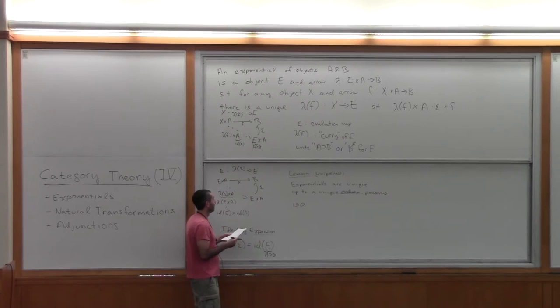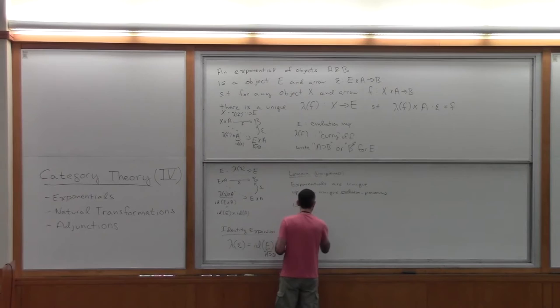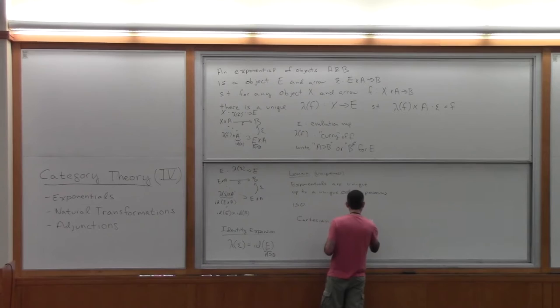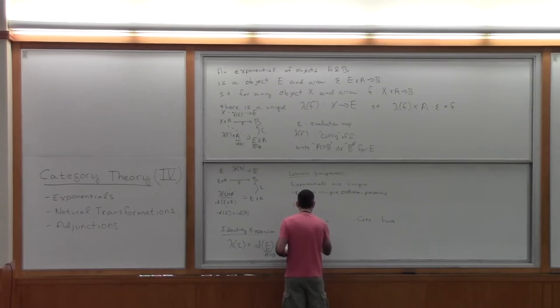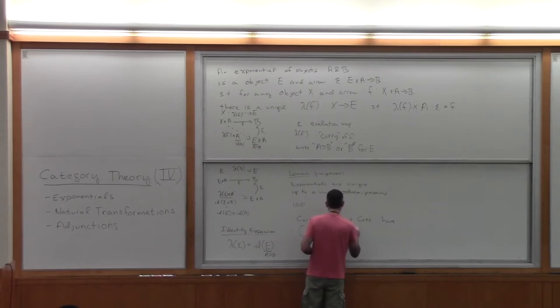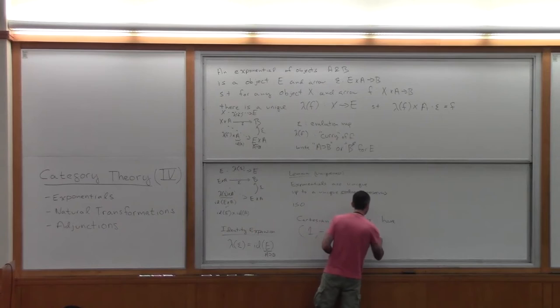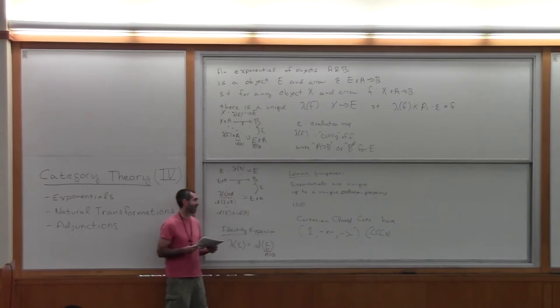Last time I said that categories with finite products — terminal objects and binary products — were Cartesian categories. Now, if we add exponentials, we get what are called Cartesian closed categories, which have finite products and exponentials. These are usually abbreviated as CCCs.